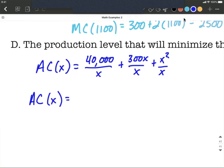So the 40,000 divided by x I can move this x up into the numerator by using a negative exponent. Now the x in 300x over x, we have one in the numerator, one in the denominator, so we can simply make that a 300 in the middle. And then for our last term, x² over x is going to be x.